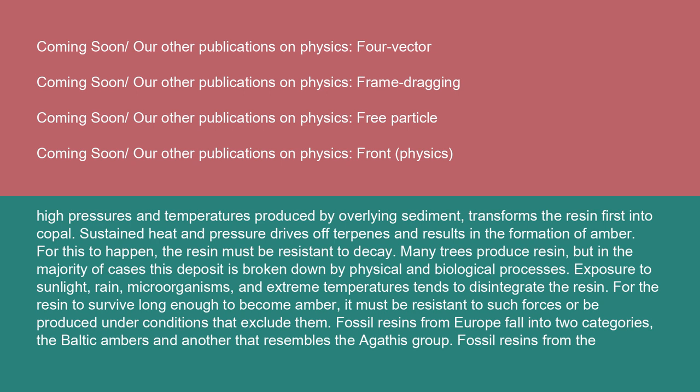For this to happen, the resin must be resistant to decay. Many trees produce resin, but in the majority of cases this deposit is broken down by physical and biological processes. Exposure to sunlight, rain, microorganisms, and extreme temperatures tends to disintegrate the resin. For the resin to survive long enough to become amber, it must be resistant to such forces or be produced under conditions that exclude them. Fossil resins from Europe fall into two categories: the Baltic ambers and another that resembles the Agathis group.